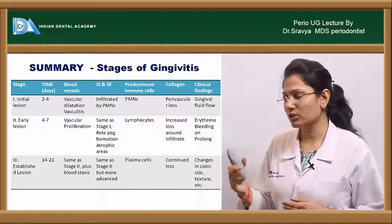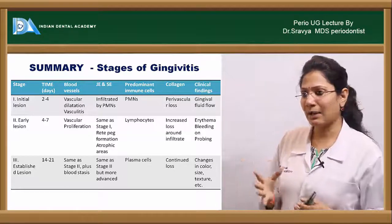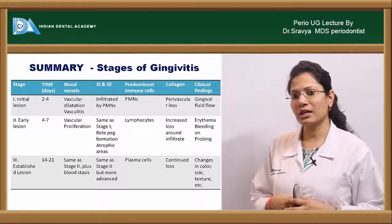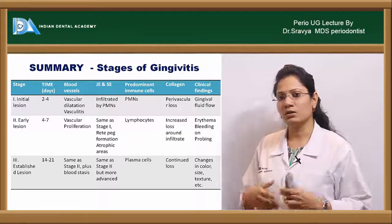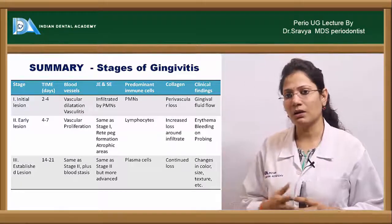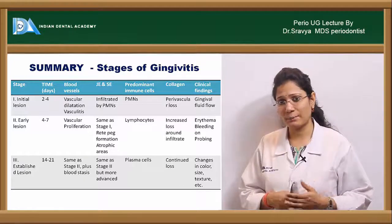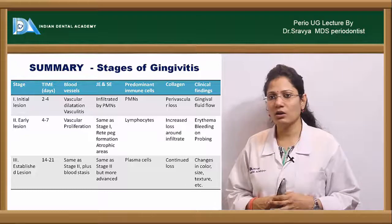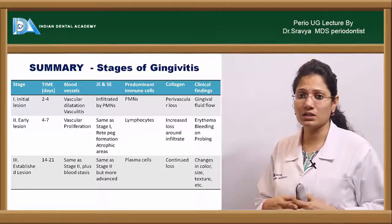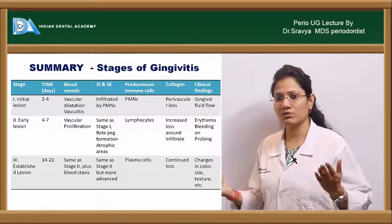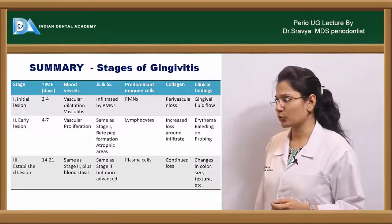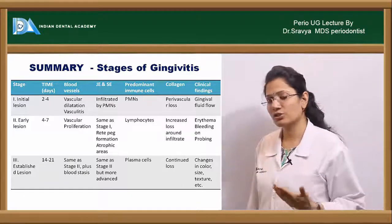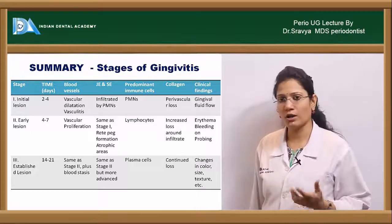The established lesion occurs between 14 to 21 days of plaque accumulation. There is increased vascular proliferation, vasculitis, stasis of blood, advanced rete peg formation, and atrophy of the epithelium. The predominant cell type is B lymphocytes and plasma cells. There is breakdown of the connective tissue, continued loss around inflammatory cells, perivascular areas, and other areas of connective tissue. Clinical findings are all signs of clinical inflammation: color changes, contour changes, size changes, texture changes, and increased bleeding on probing.